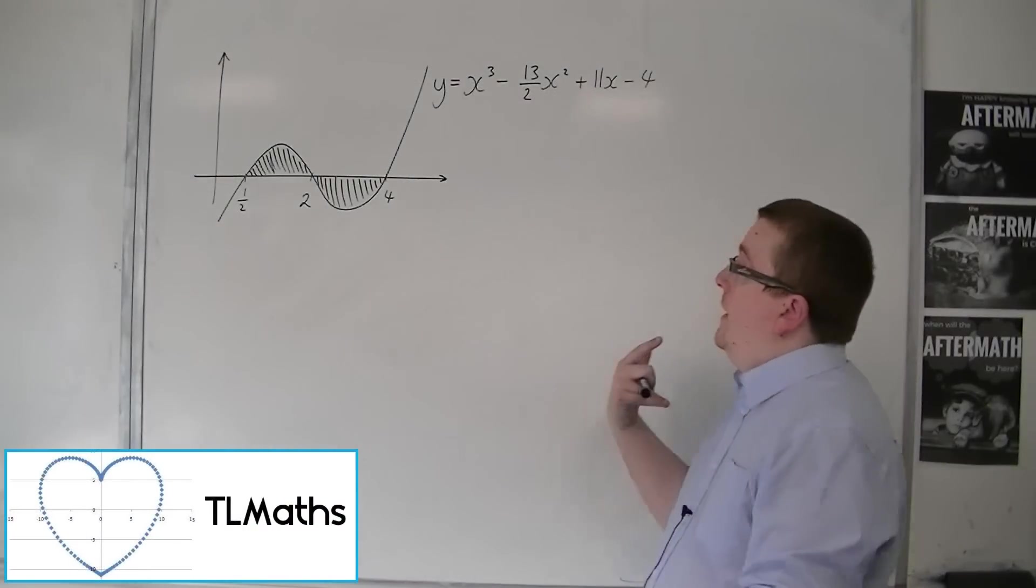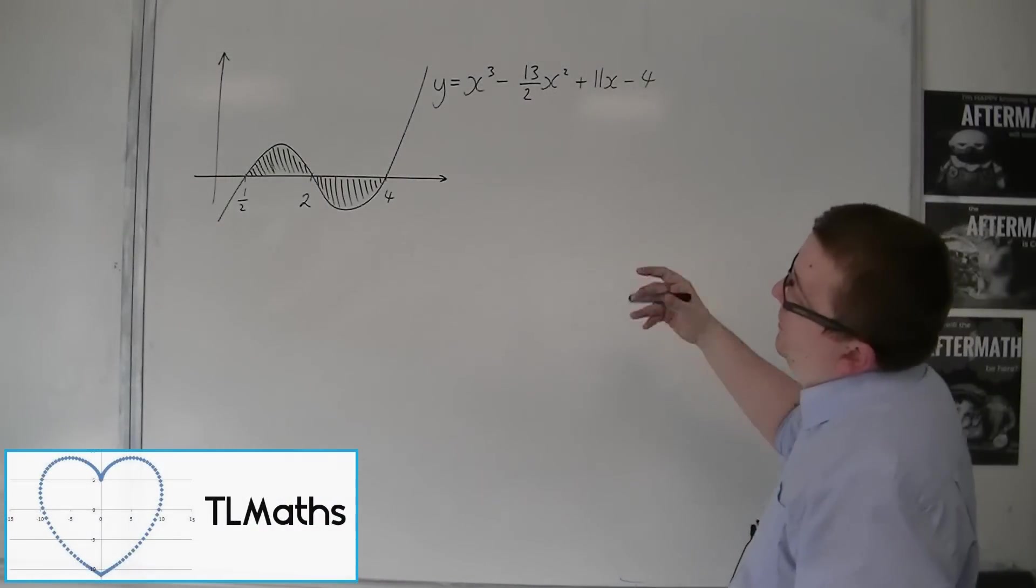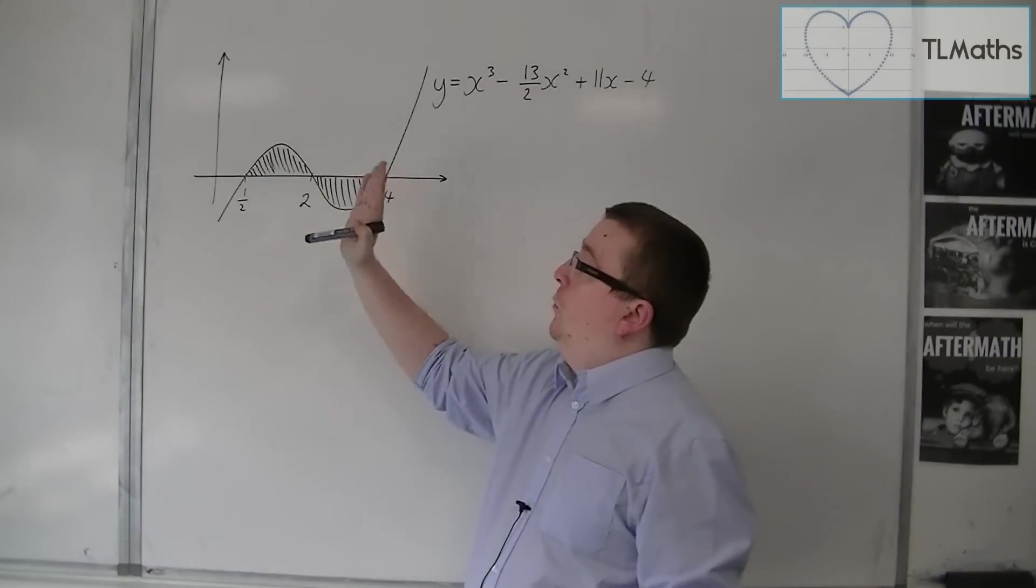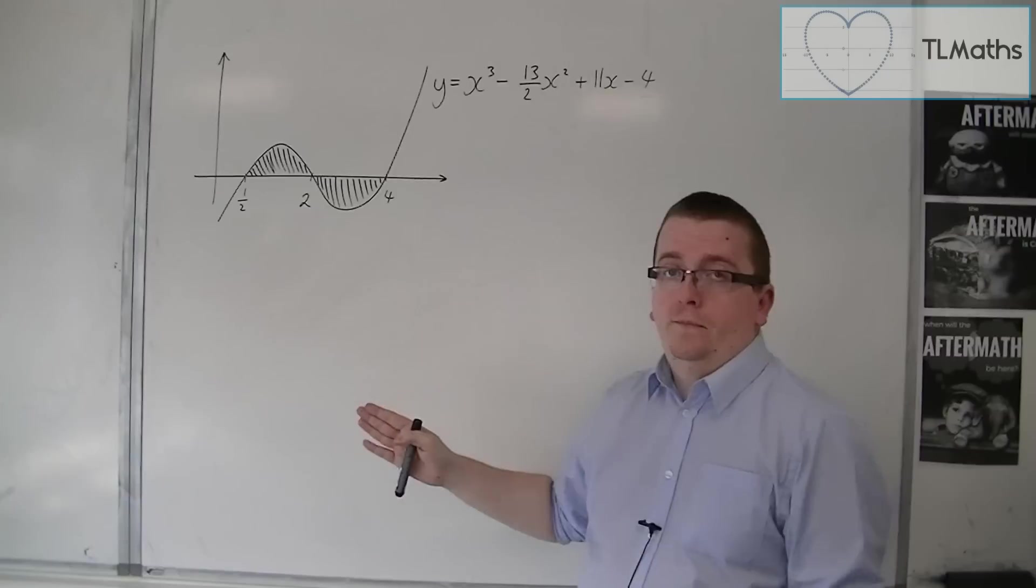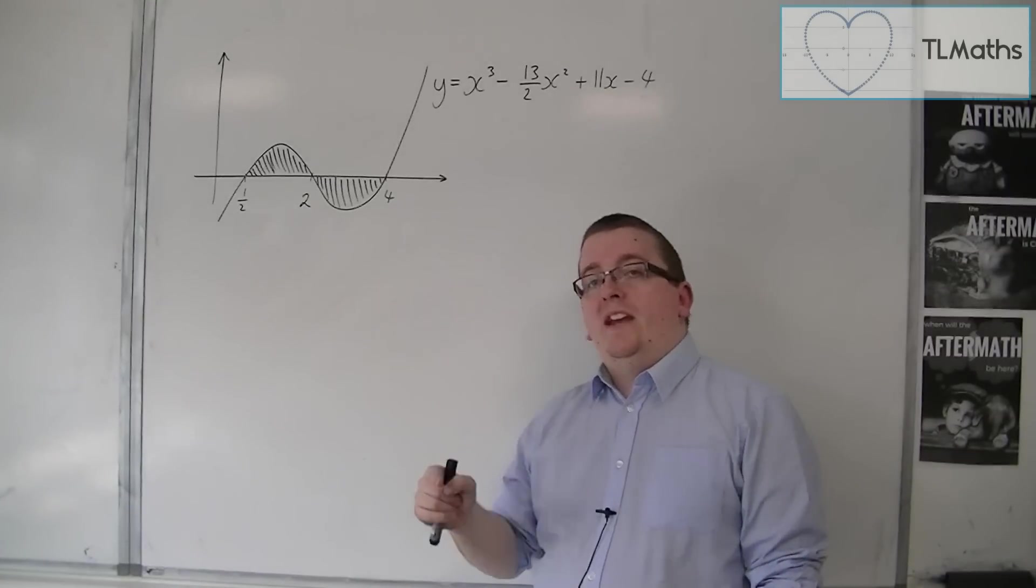So in this example we have a cubic and I know that it crosses the x-axis at 1/2, 2, and 4, and I'm going to find the shaded area.